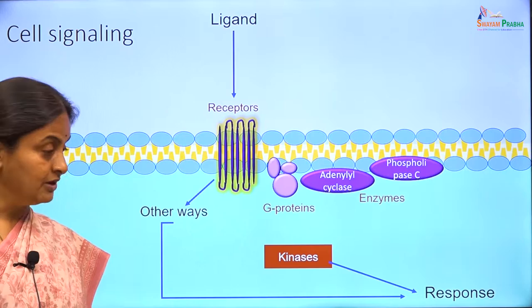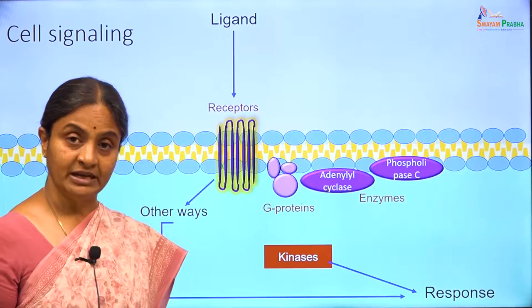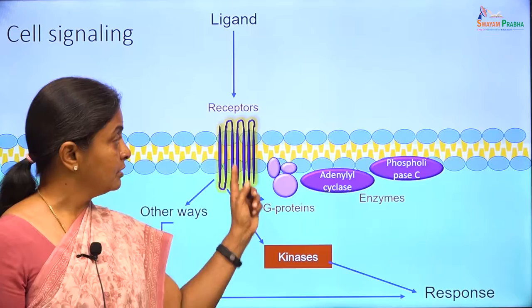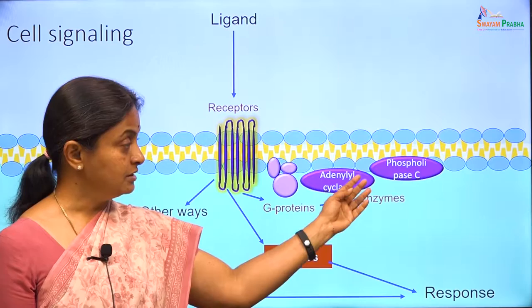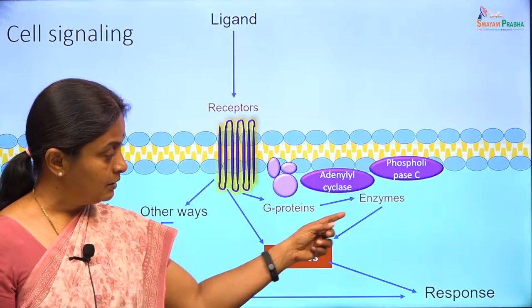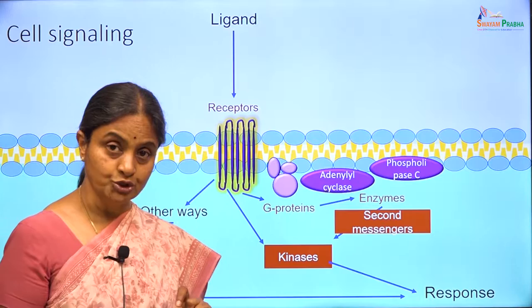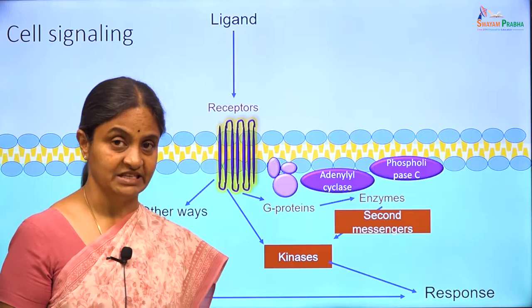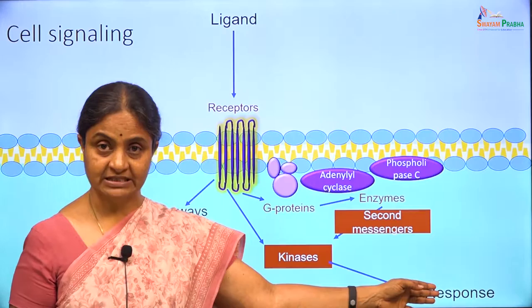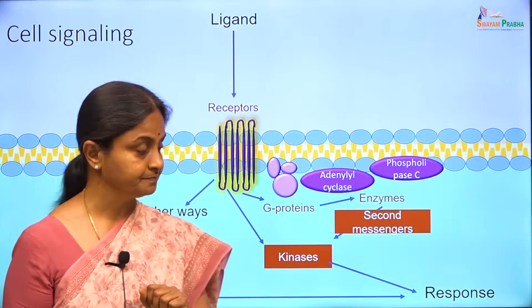There are other ways in which a response can be brought about without involving kinases. But when it comes to kinases, the ligand-receptor combination may activate them directly, or the ligand-receptor complex may activate a G-protein, which activates a membrane enzyme, and the membrane enzyme activates the kinase within the cytoplasm — usually through a signalling molecule called the second messenger. This scheme of signalling will be discussed first.